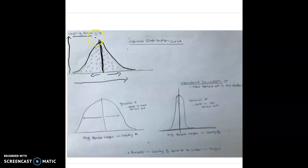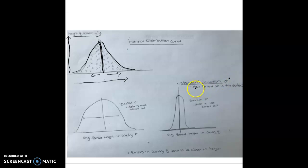A quick note: the mean height for women in the United States is actually 5'4", but for the sake of ease we're going to use 5'6" just for discussion's sake. Now that we understand the normal distribution curve, let's talk about standard deviation, signified by sigma. Standard deviation answers the question: how spread out is the data?